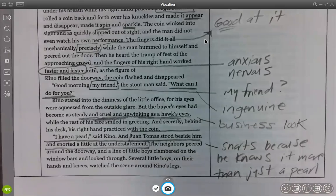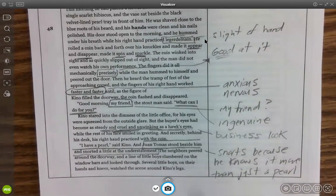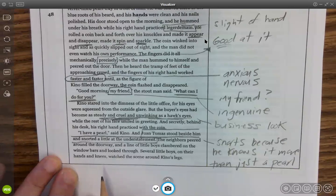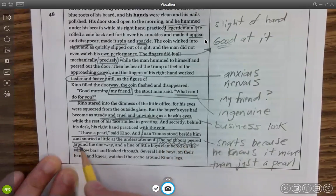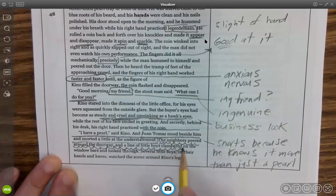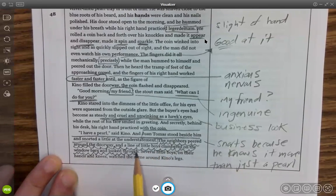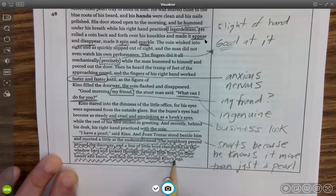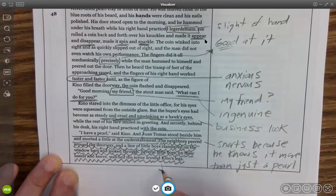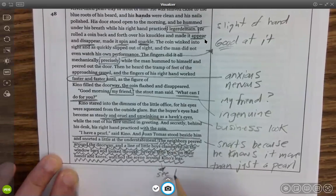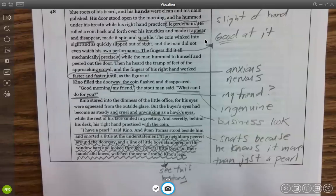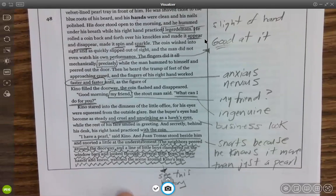And the neighbors peered around the doorway, and a line of little boys clambered on the window bars and looked through several little boys on their hands and knees, watched the scene around Kino's legs. I mean, this is the, all the people who have come to see Kino sell his pearl. I mean, it's standing room only. So much so that little boys, if they want to get a look at this historic moment in the town, they're like crawling around on the floor, hanging around Kino's knees and feet, just to see if they can see this historic moment. And I'm just going to write, see this history. I've made a lot of marks on this page, as you can see. There is quite a bit going on.